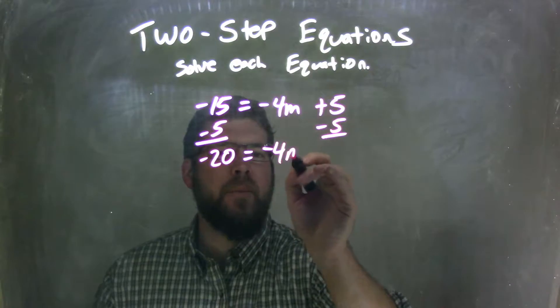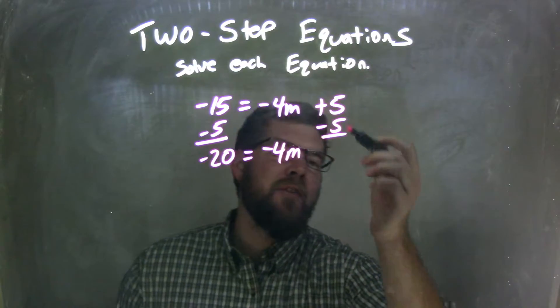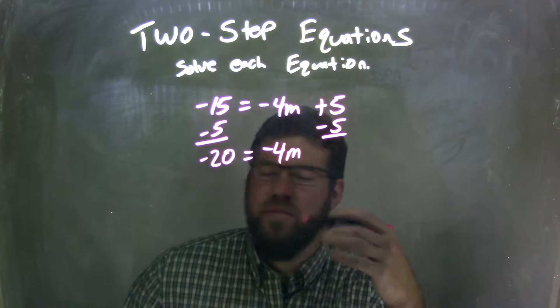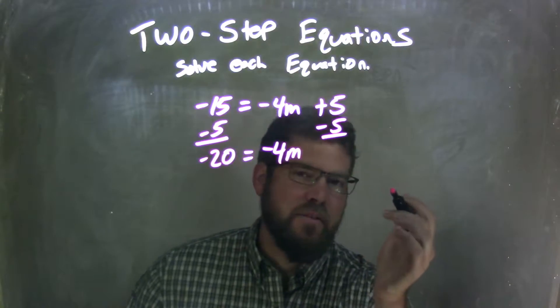Equals negative 4m, I'm bringing that down. And 5 plus negative 5, that just cancels, right? That's 0, and we don't need to write the add 0 here.